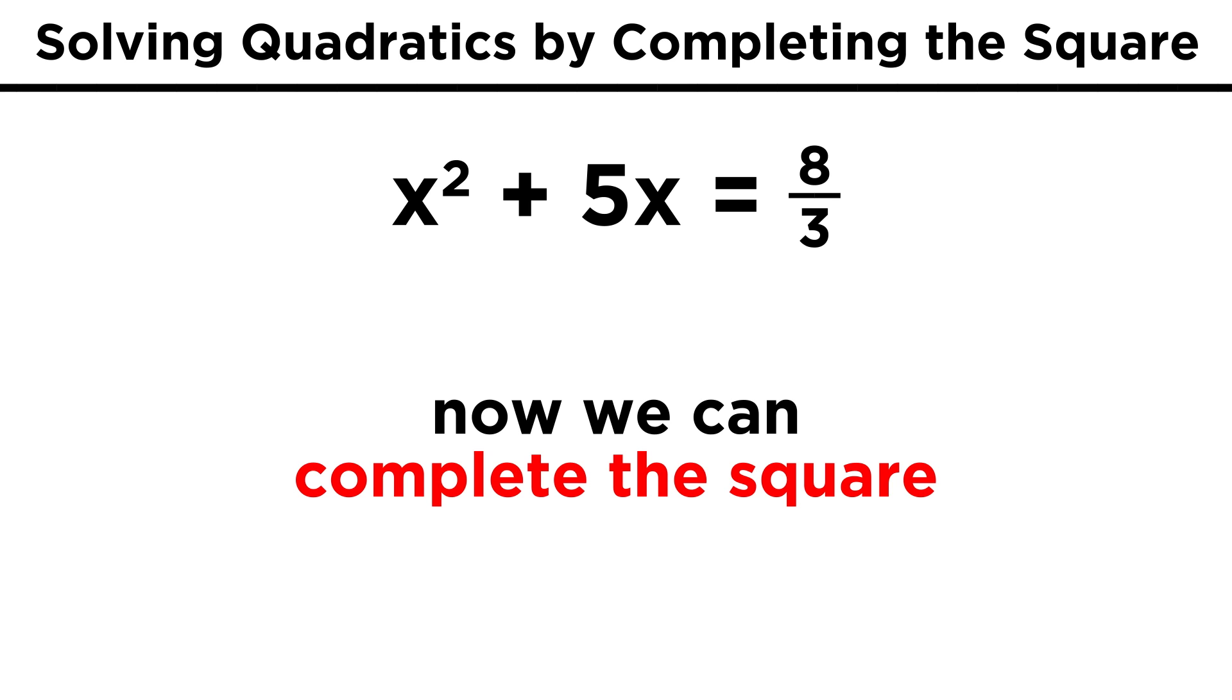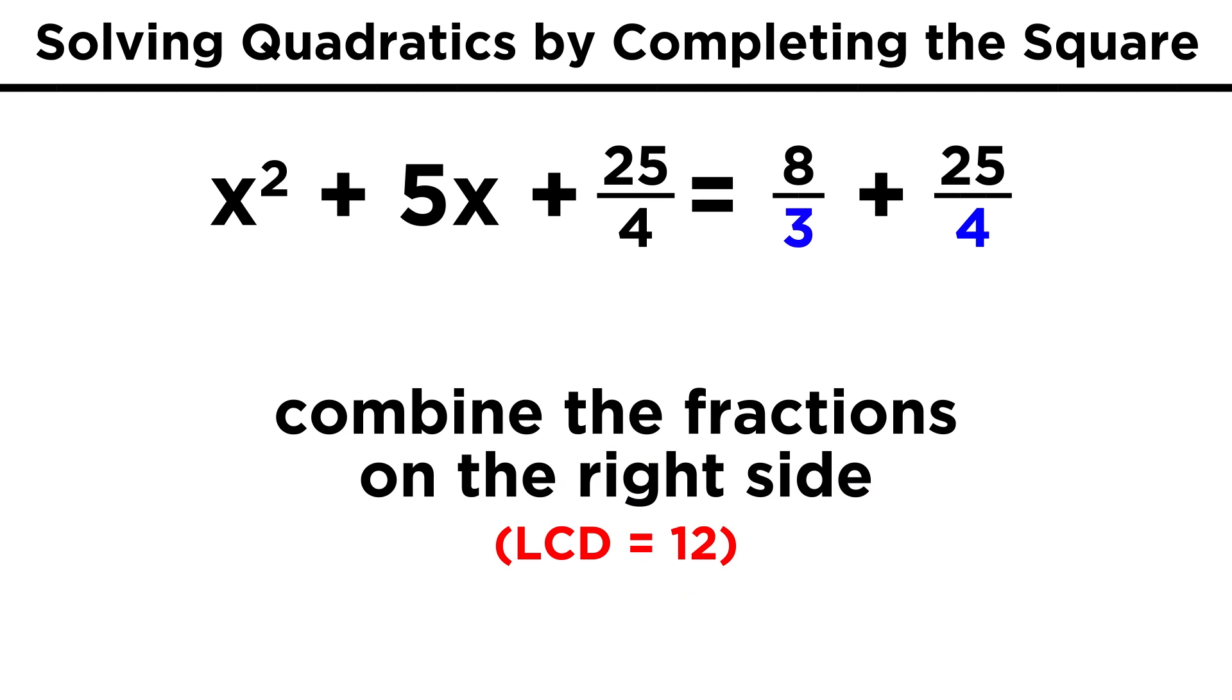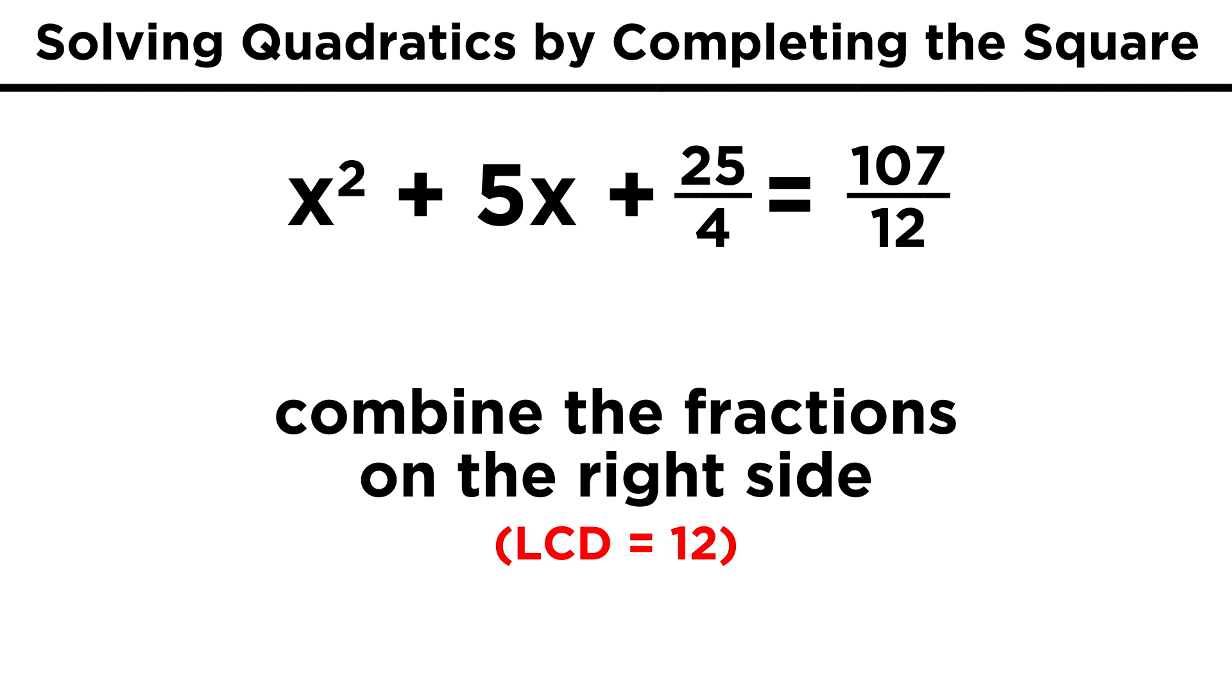Now we can complete the square. With 5, it may seem messy, because cutting in half gives 5 halves, which then squares to give 25 fourths. But if that's what we get, then that's what we have to work with. We add that to the right side as well, find the least common denominator, which is 12, and convert these fractions to 32 twelfths and 75 twelfths, so that we can add them together to get 107 twelfths.